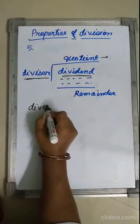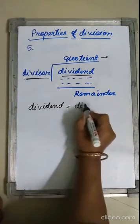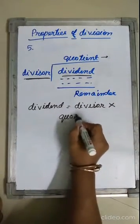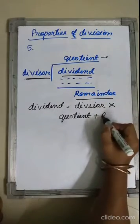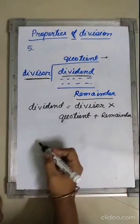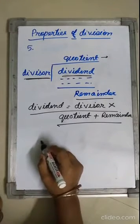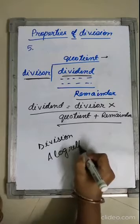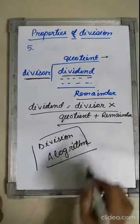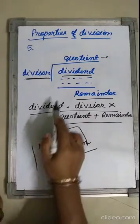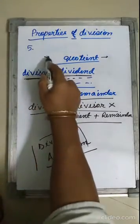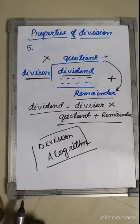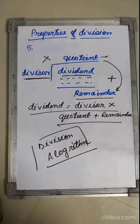So, dividend equals divisor into quotient plus remainder. That is nothing but: dividend = (divisor × quotient) + remainder. I shall explain with an example how to prove this in my next topic.